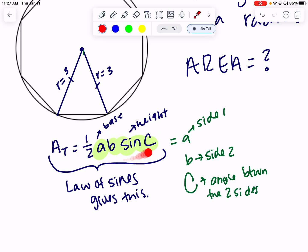If I want to use this formula to find the area of this triangle, I have side one, I have side two, I just need to know the angle between them.